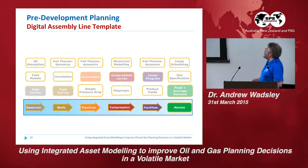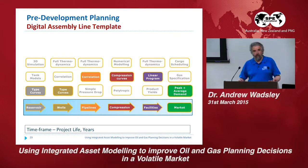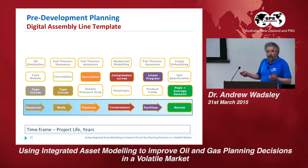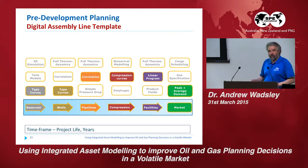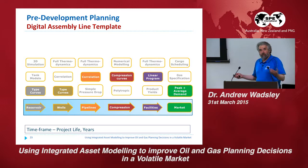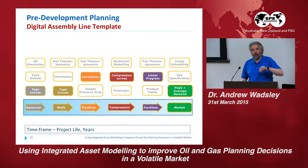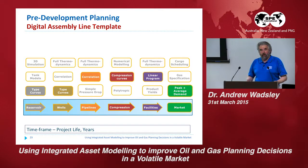Moving to pre-development planning: we've got our reservoirs, a few appraisal wells, we're honing down on what the markets want. I'll probably have some type curves from a simulation model. For pipelines, I'm running correlations — pretty standard, Beggs and Brills still used even though it was only calibrated on 2-inch pipelines. Compression curves, or maybe just a simple pressure drop — at some point I'm going to have to increase my pressure by 200 psi. Facilities going out to market: I'm looking at peak demand and average demand, what's my load factor, can I meet that? This is a classic pre-development planning model.